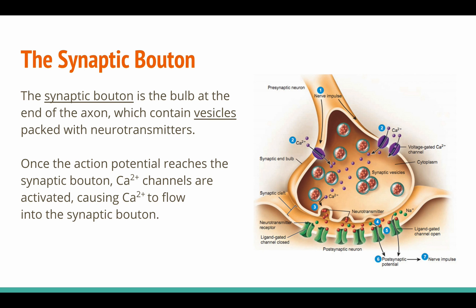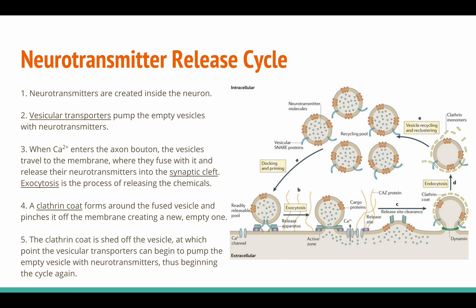The action potential travels across the axon and finally reaches the bulb-like area called the synaptic bouton. The synaptic bouton contains vesicles packed with neurotransmitters. Once the action potential reaches the synaptic bouton, calcium channels are activated, causing calcium to flow in and trigger a series of processes before the neuron can release neurotransmitters. To visualize the effects of calcium, we'll talk about the neurotransmitter release cycle.